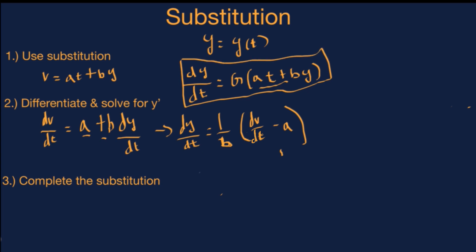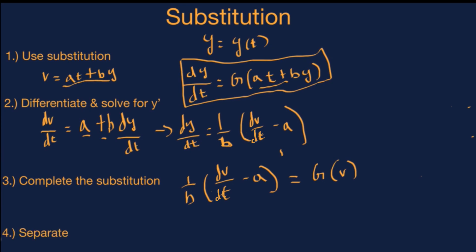When we do that, the derivative of y becomes 1 over b times the derivative of v with respect to t minus a, and that will be equal to g of v — because remember, we said that v is the linear combination a·t plus b·y. So what we have here is a separable differential equation. We can separate by multiplying by b on both sides and then adding a to solve for the derivative of v. When we do that, we get the derivative of v with respect to t is equal to a plus b times g of v.